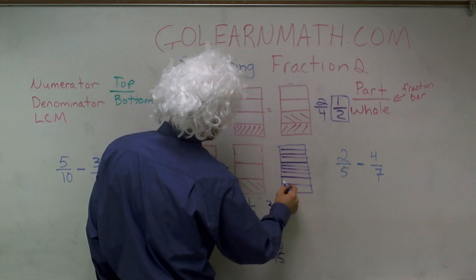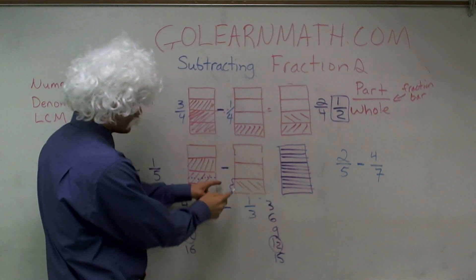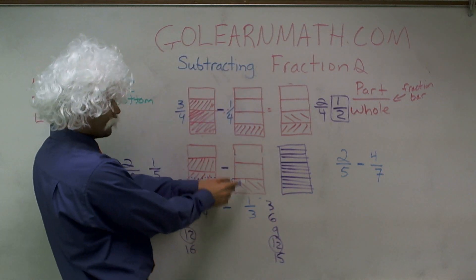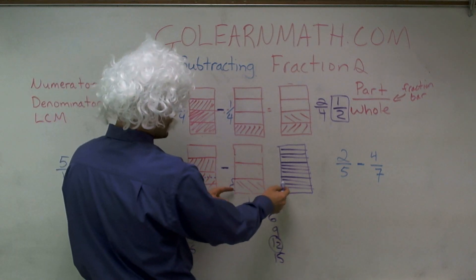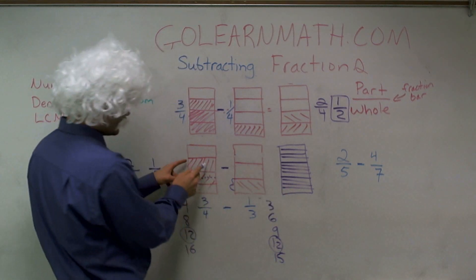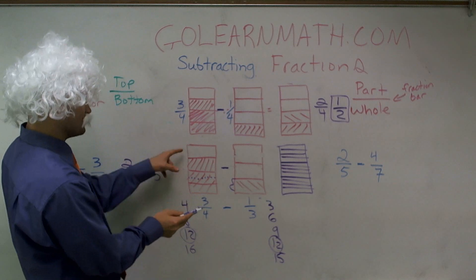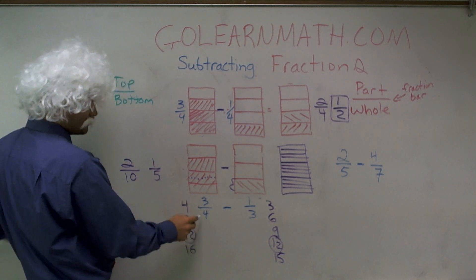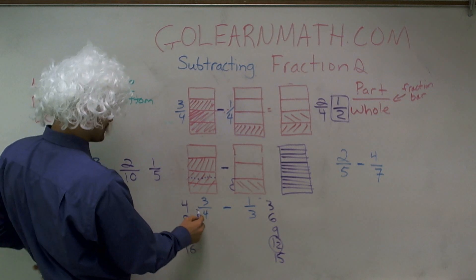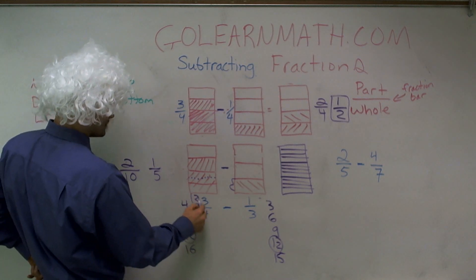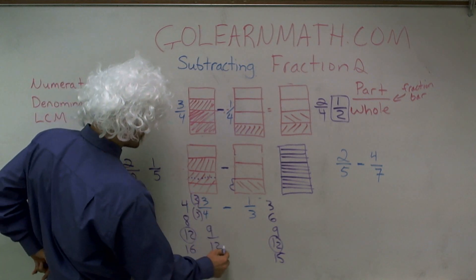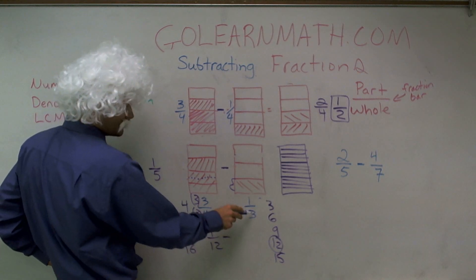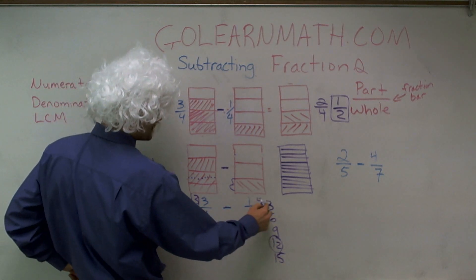Now I know this is not going to be even, but what you could say is, well, how many 12ths is 1 third? And you could say, well, that's going to be 4 of them. And then how many 12ths is going to be 3 fourths? Well, let's look at it. To get this to be 12, I need to multiply by 3 over 3. So therefore, I have 9 12ths minus, to get this to be 12, I need to multiply by 4 over 4.